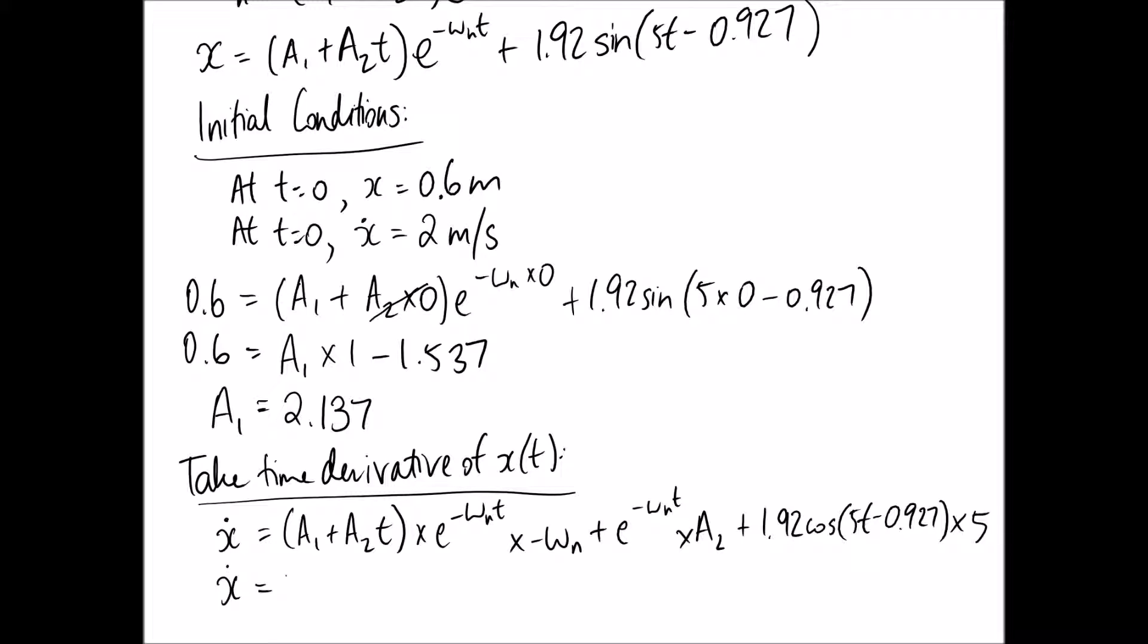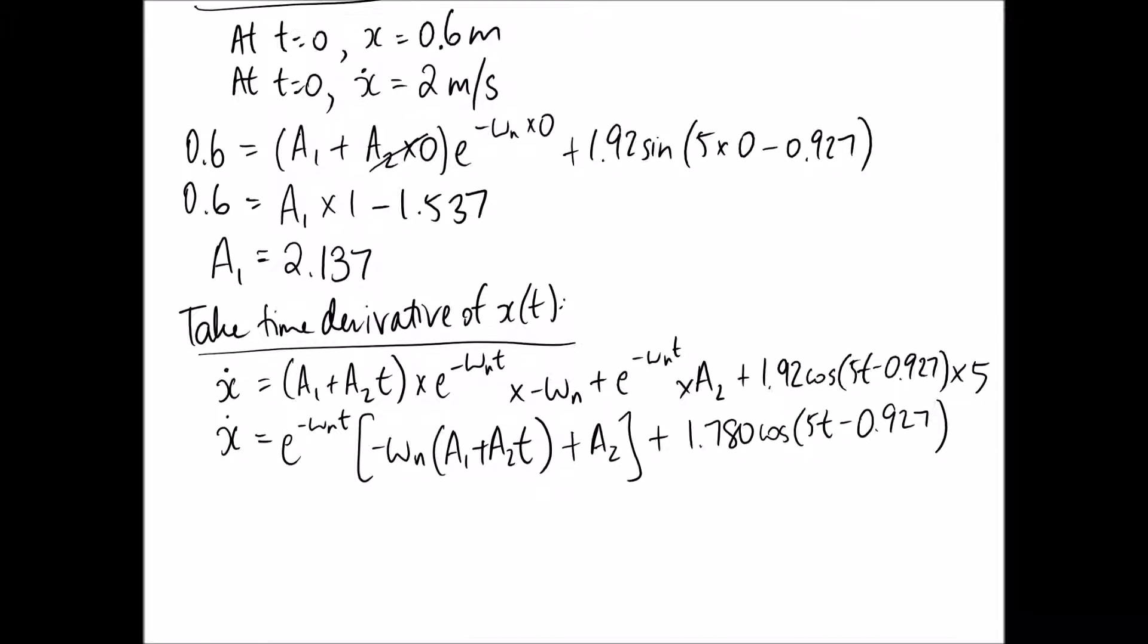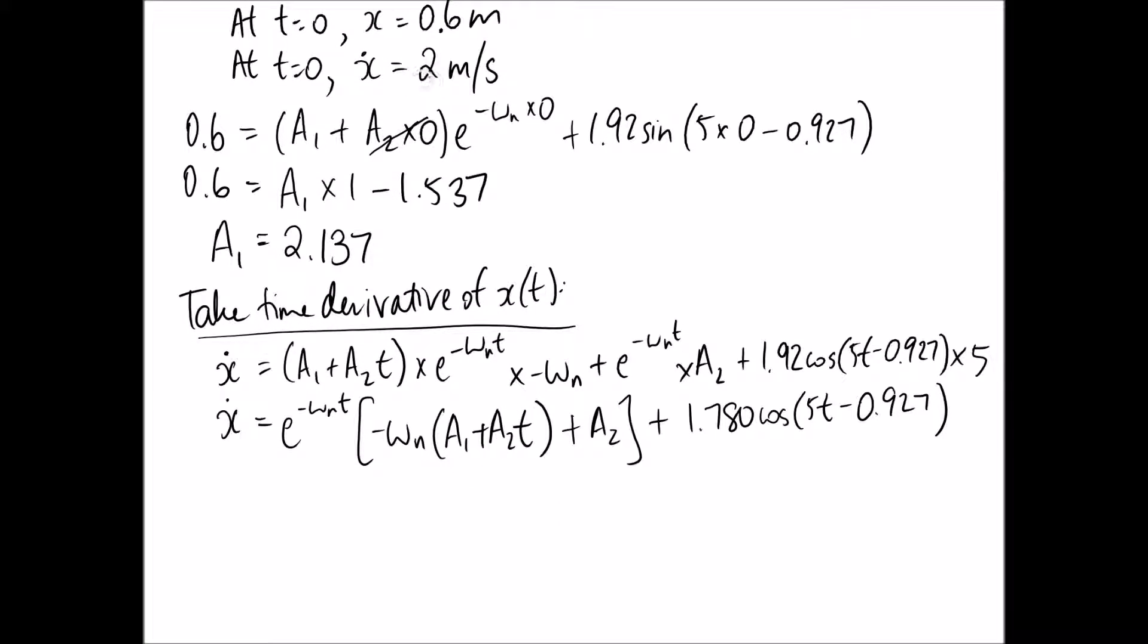So making this look a little bit nicer, we can write it like this. So now we can use our second initial condition within this equation. And that's, we know x dot is 2 when t is equal to 0.